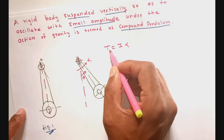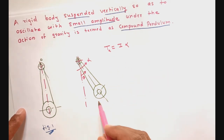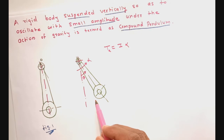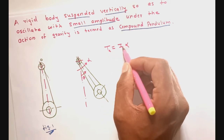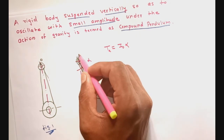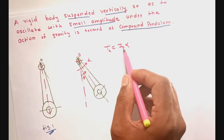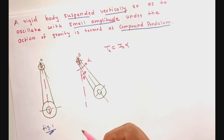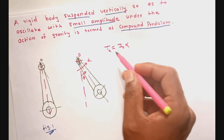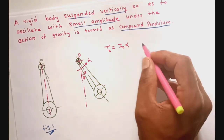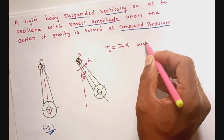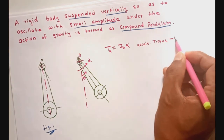We will call this torque as accelerating torque because it accelerates the connecting rod and allows it to remain in oscillations in the absence of the disturbing force. So accelerating torque according to Newton's second law equals moment of inertia about the axis of rotation. Our body is rotating about pivot point O, so moment of inertia about point O, that is I_O, into its angular acceleration alpha, which acts in the direction of angular displacement theta.